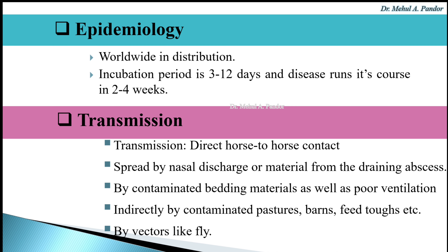Transmission can take place by direct horse-to-horse contact. It also spreads by nasal discharge or material from draining abscesses, by contaminated bedding material, as well as poor ventilation. Indirect transmission is carried out by contaminated pastures, barns, feed, troughs, and by vectors like flies.